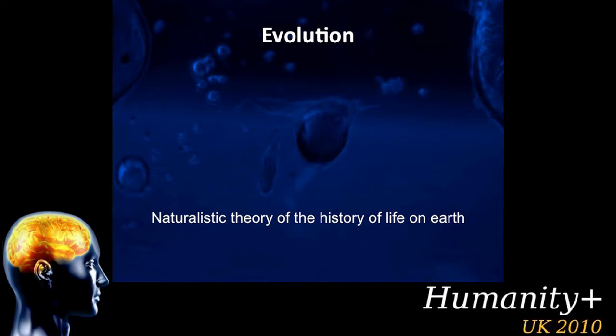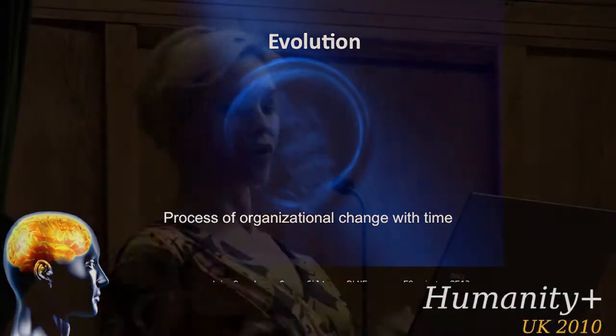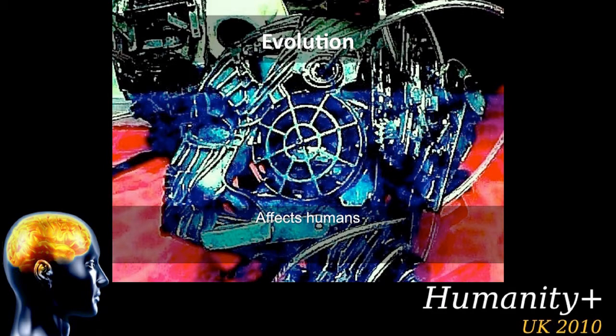I just want to make sure that we're starting on the right page. We all think we know what evolution is, but lots of people have very slightly different views on what evolution is. Where I'm coming from is that evolution is a naturalistic theory of the history of life on Earth. It's a process and a phenomenology, and we can measure that through the organisational change of creatures with time — through the fossil record, differences in morphology between species, and biochemistry. It also affects humans, so we're actually part of an evolutionary story.